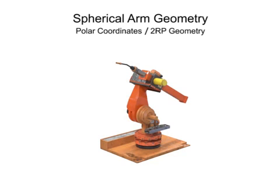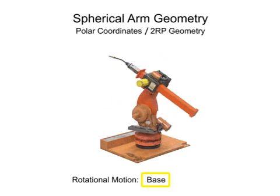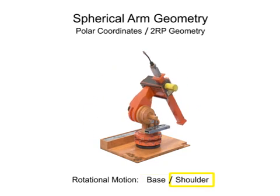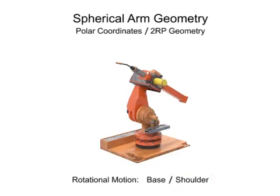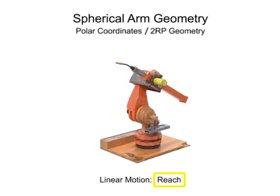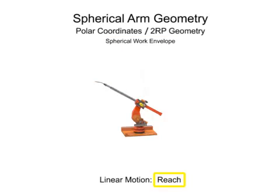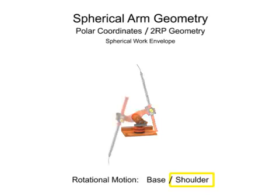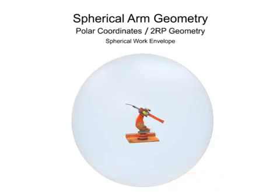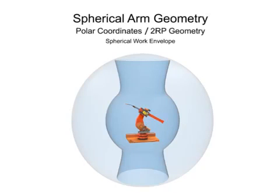Robotic arms with spherical geometry have rotational movement in two directions: rotational movement at the base and rotational movement at the shoulder. Spherical arm geometry robots also have linear motion in one direction, typically the reach of the arm. Spherical arm geometry robots have a mostly spherical work envelope at their outer reach, but are limited by the linear reach of the arm and the rotation of the shoulder joint. The shape of the robot's inner work envelope is almost conical and does not become a sphere until the arm extends.